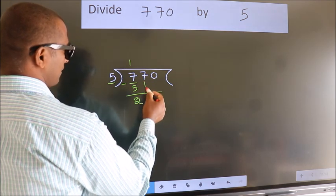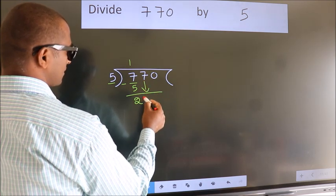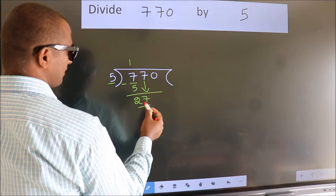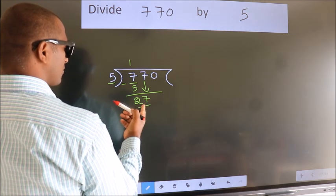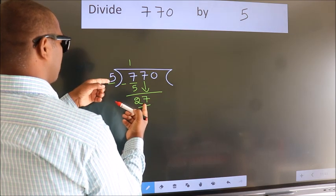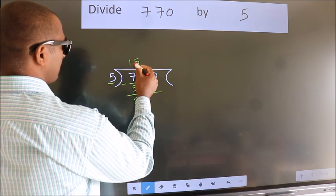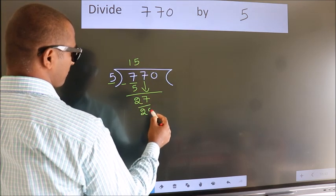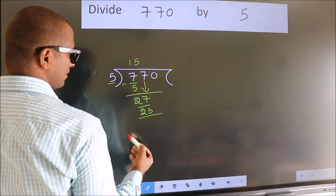After this, bring down the beside number. So 7 down, so 27. A number close to 27 in the 5 table is 5 5s, which is 25. Now we subtract.